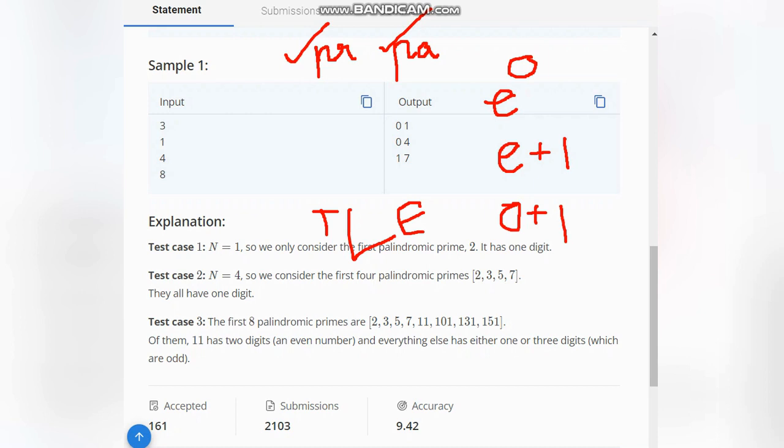Now, how to resolve this Time Limit Exceeded error? The simplest solution is to generate a list of all the prime palindromic numbers through your code separately, and then use that list in this code. From that list, you need to find just the first N numbers, figure out if they're even or odd length, and do even plus one or odd plus one accordingly.